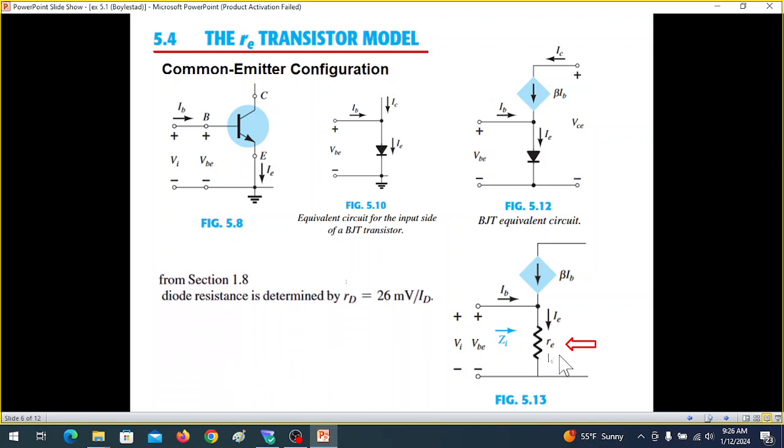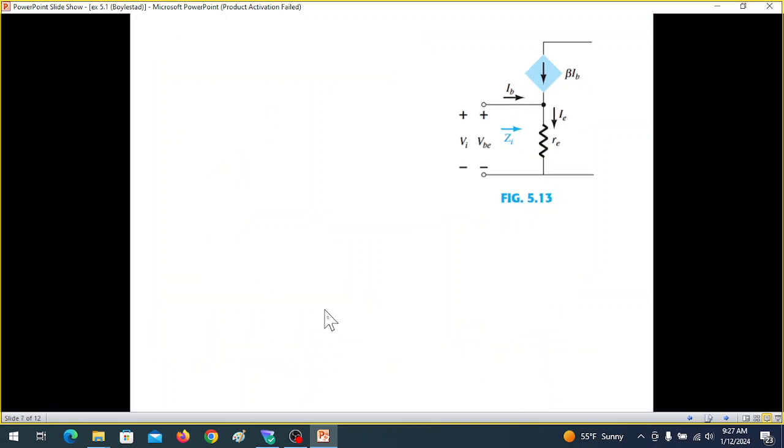And what is RE? Basically, we have learned in section 1.8 that the diode resistance called RD is 26 millivolt divided by the diode current. Now in this scenario, the diode is connected in the emitter and that is where the resistance is called now RE instead of RD. And the current to diode is the emitter diode current, so it will be IE. So this equation we can modify and we call it RE is equal to 26 millivolt divided by IE, the emitter current. Remember this IE means we are only using the DC value of the emitter current.